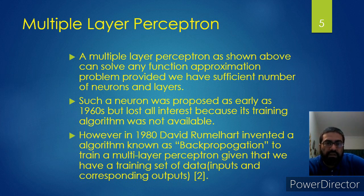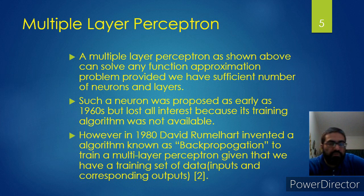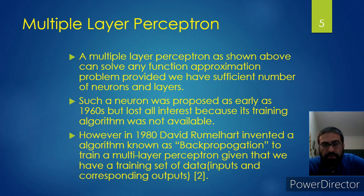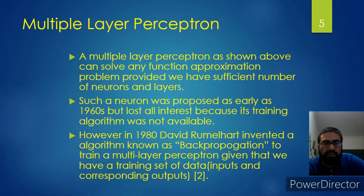This idea was proposed but could not be realized because of the lack of required computing power. In the 1980s, when we had a reasonable amount of computing power, David Rumelhart invented an algorithm known as the backpropagation algorithm to train multilayer perceptrons, provided that we have a set of data points and the corresponding outputs. In the 1960s, we had the problem of computing power as well as no training algorithm. In the 1980s, Rumelhart proposed backpropagation and things started working.